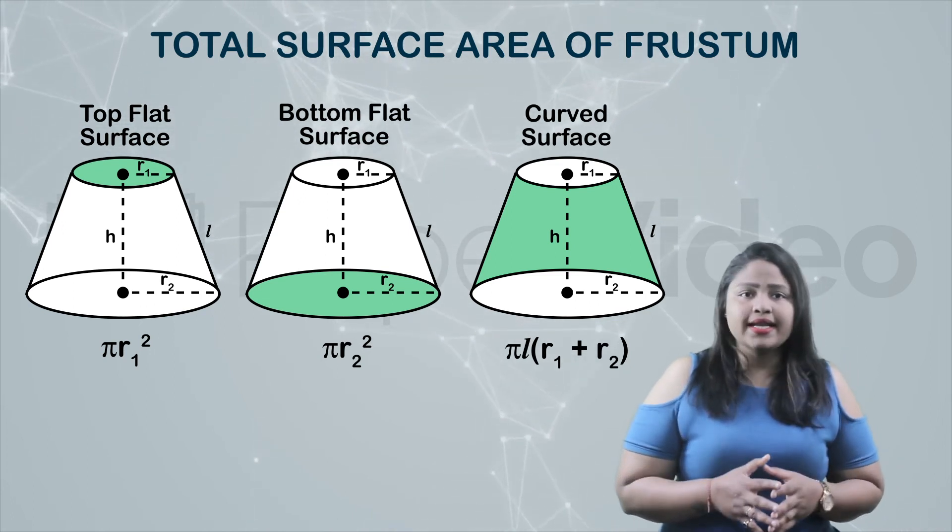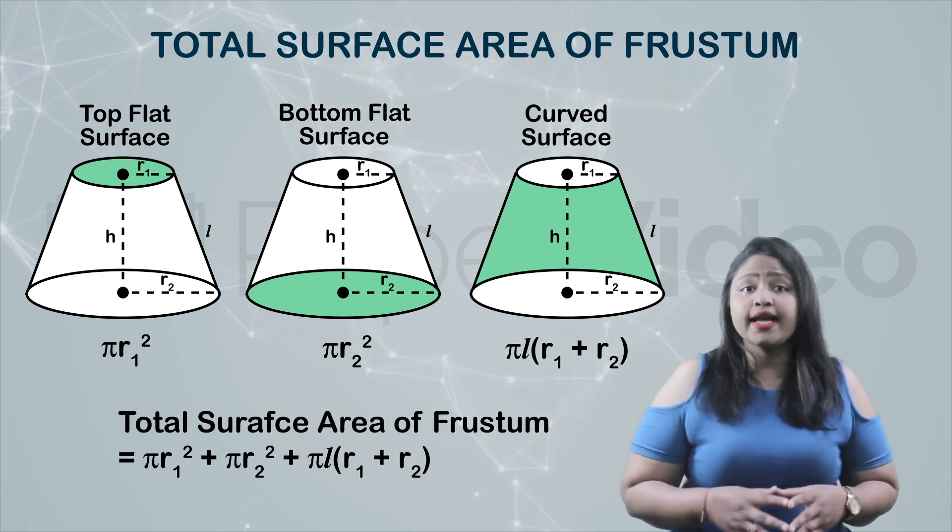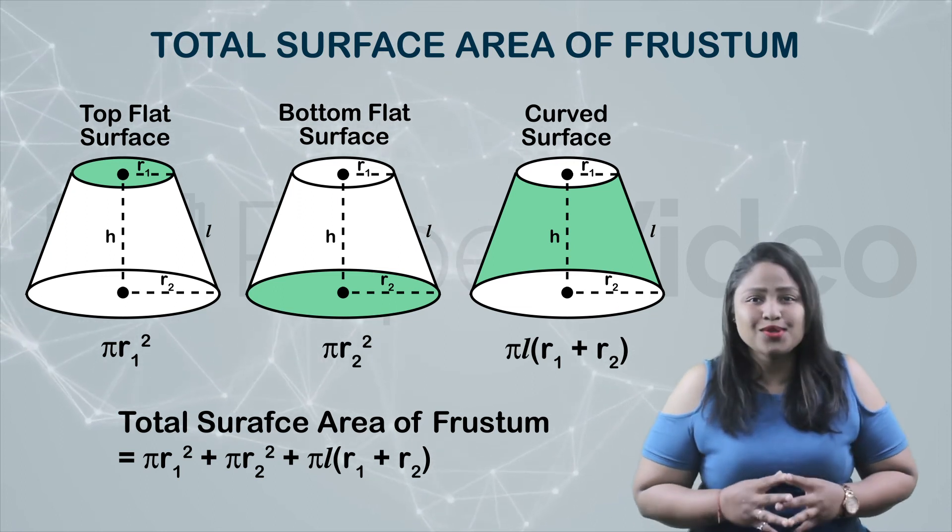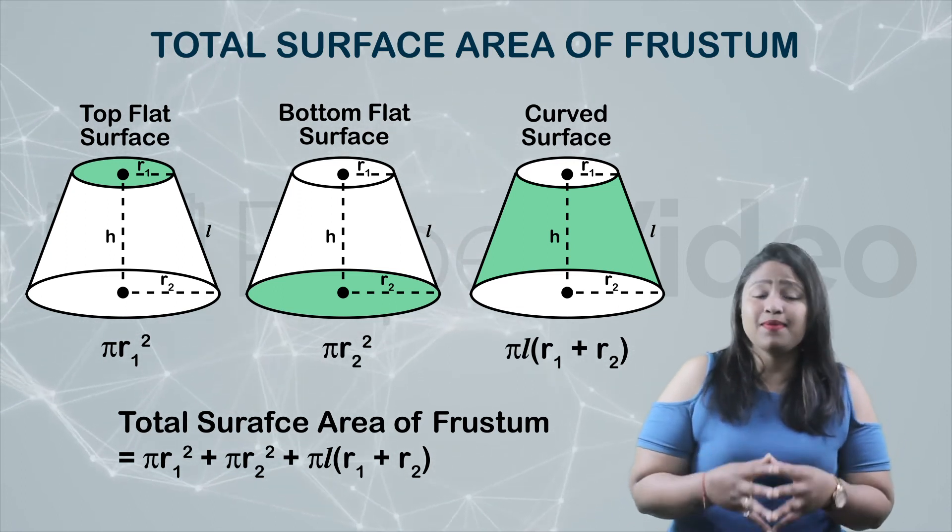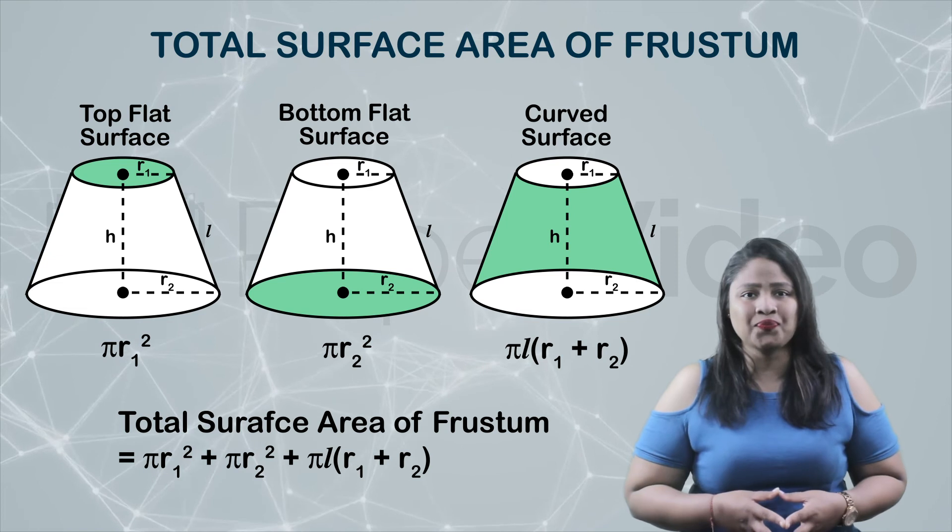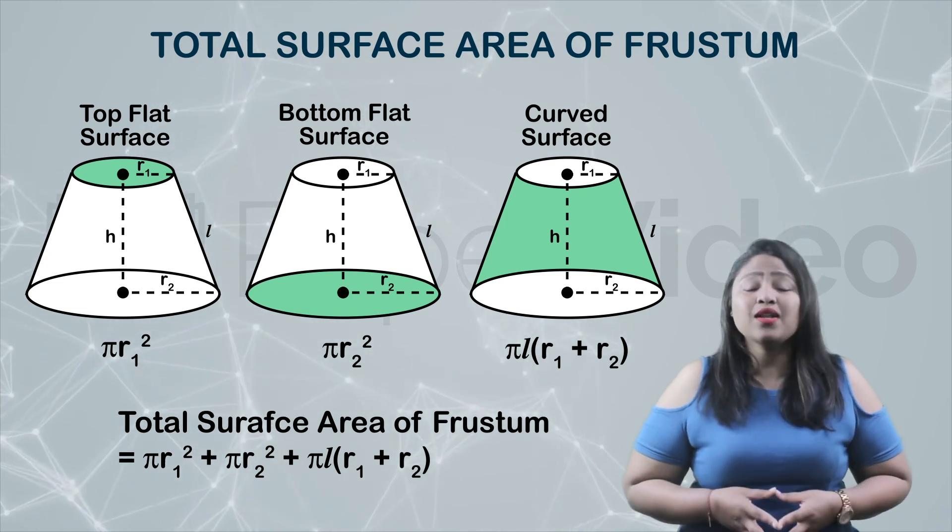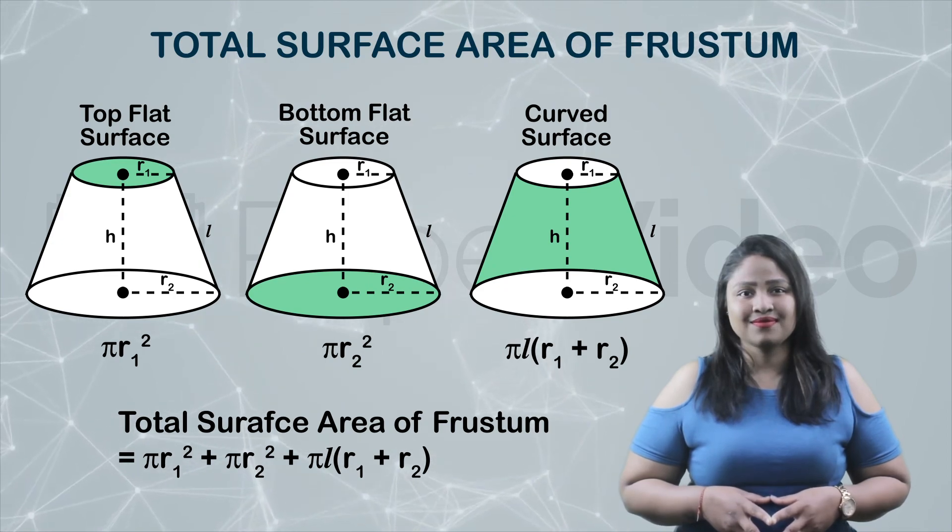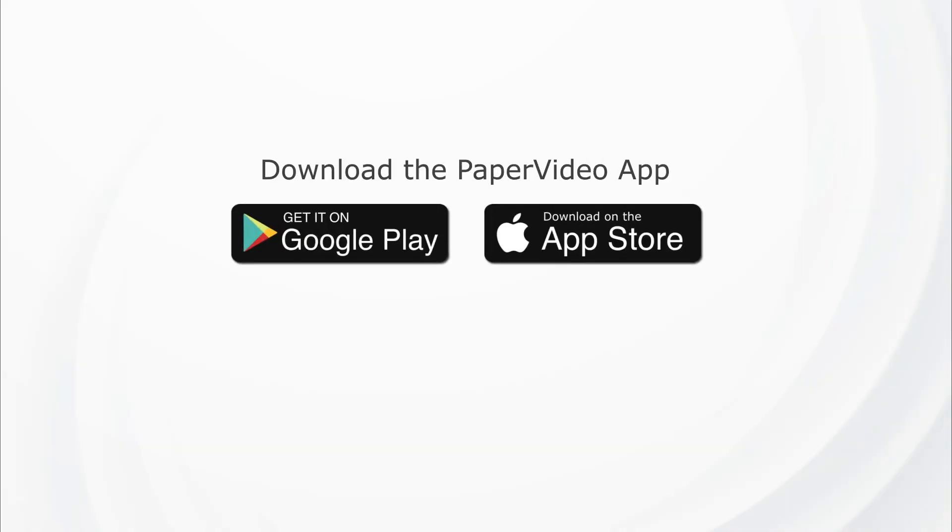Combining all these areas, we get the total surface area of a frustum as pi r1 squared plus pi r2 squared plus pi l multiplied by r1 plus r2. Using this formula, we can calculate the total surface area of a frustum of a cone.